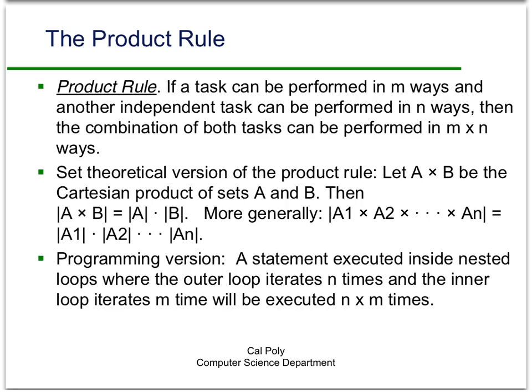The set-theoretic version of the product rule, which we've also talked about, is: if we look at the Cartesian product of two sets — that's the set of ordered pairs where the first entry comes from A and the second entry comes from B — then the cardinality of A cross B is equal to the cardinality of A times the cardinality of B. More generally, you can take the Cartesian product of any number of sets, and its cardinality will just be the product of the cardinalities of each of the individual sets.